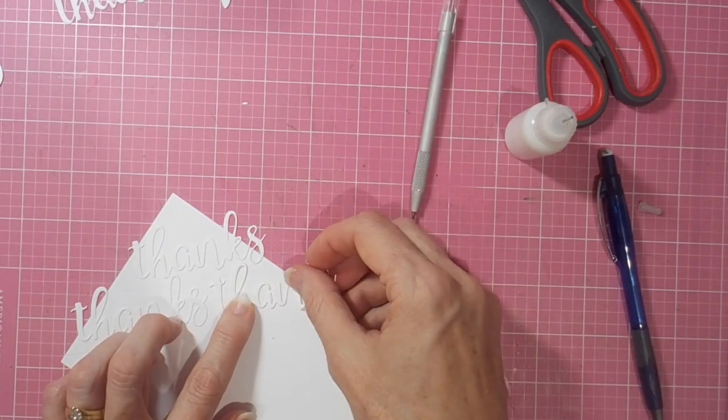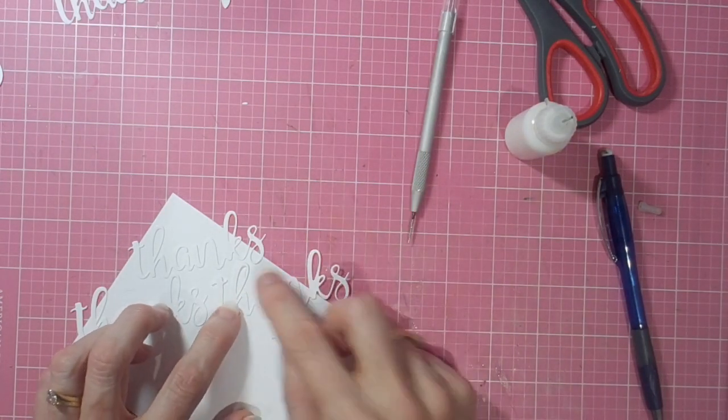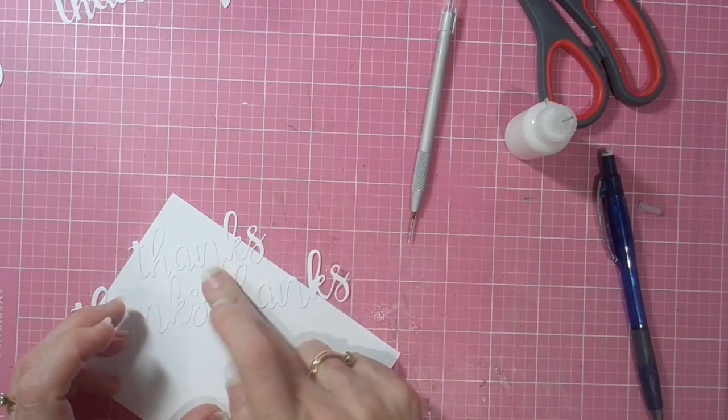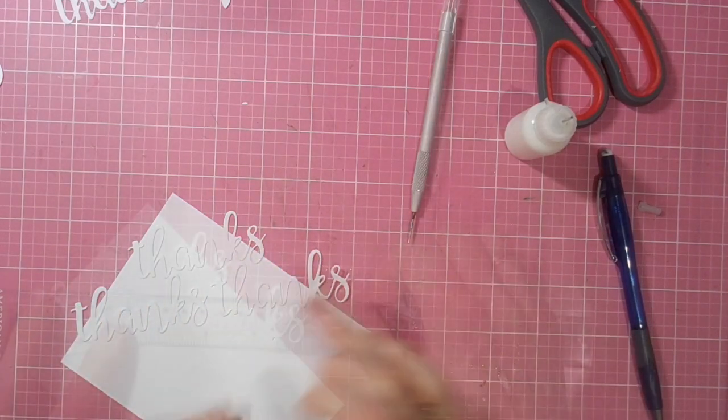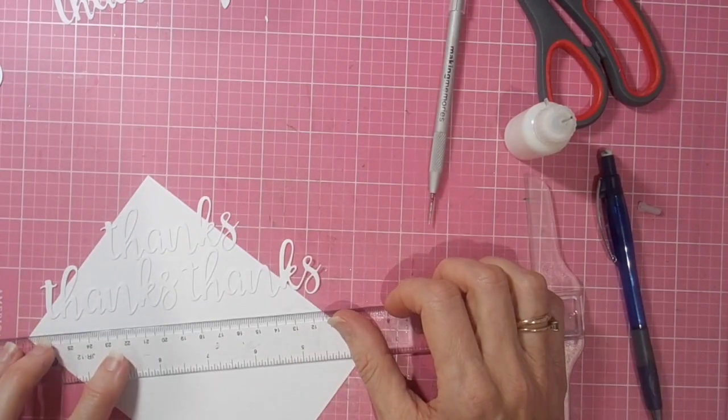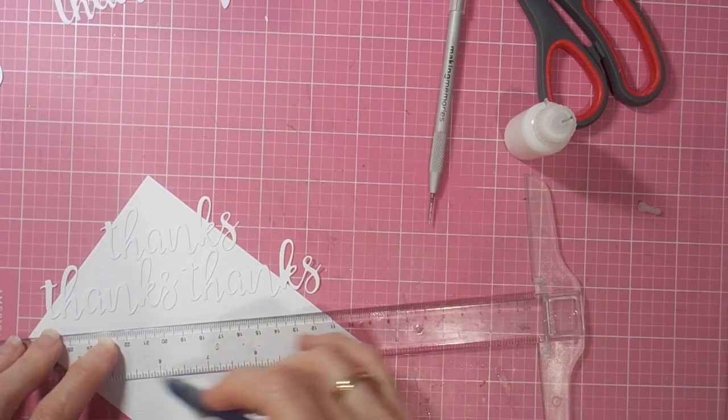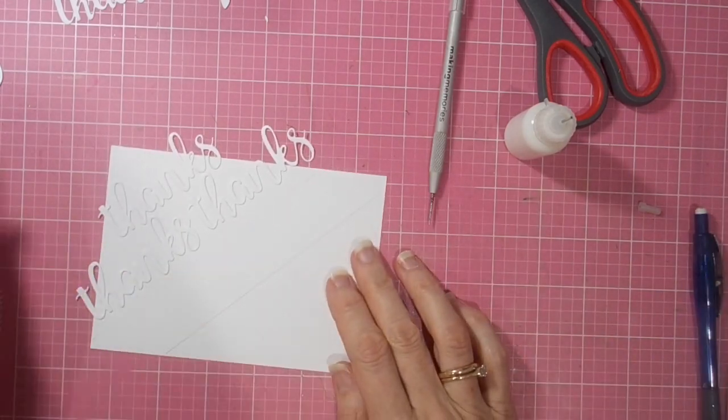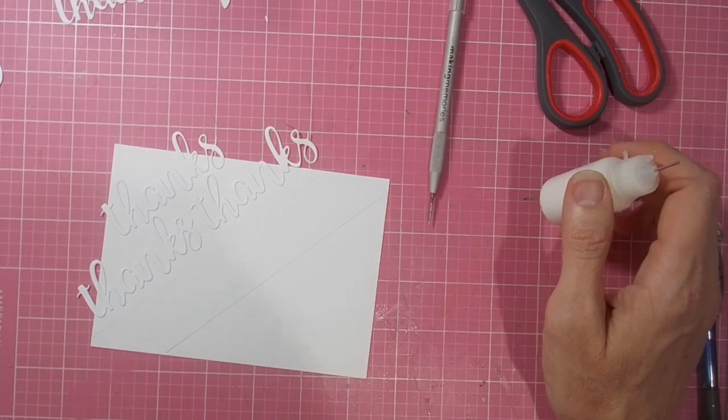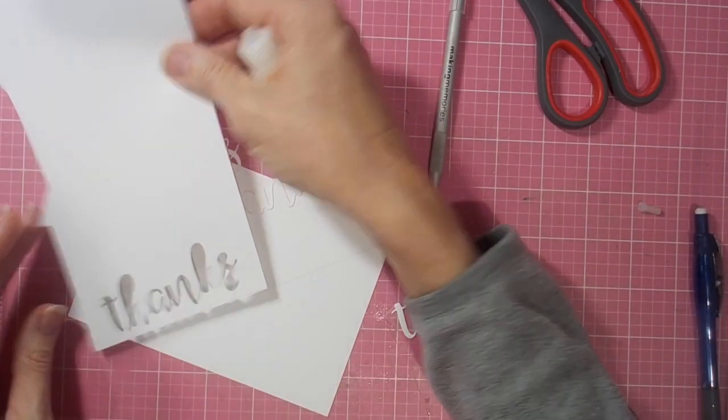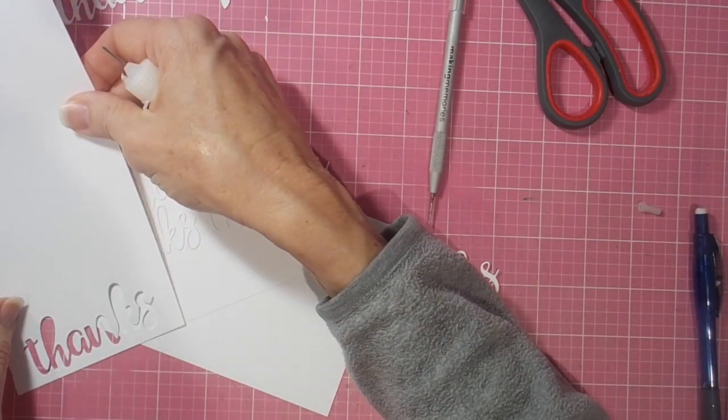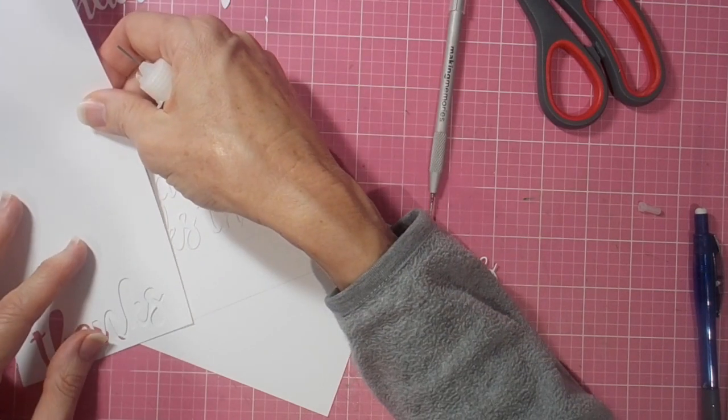Just continuing on with the process of adding the glue through the template and then adhering the die cut words down in the right positions. Once you've got a few, you'll see me turn the card over and cut off the excess that's hanging over, and I just continue doing that until the front of the card is all covered.